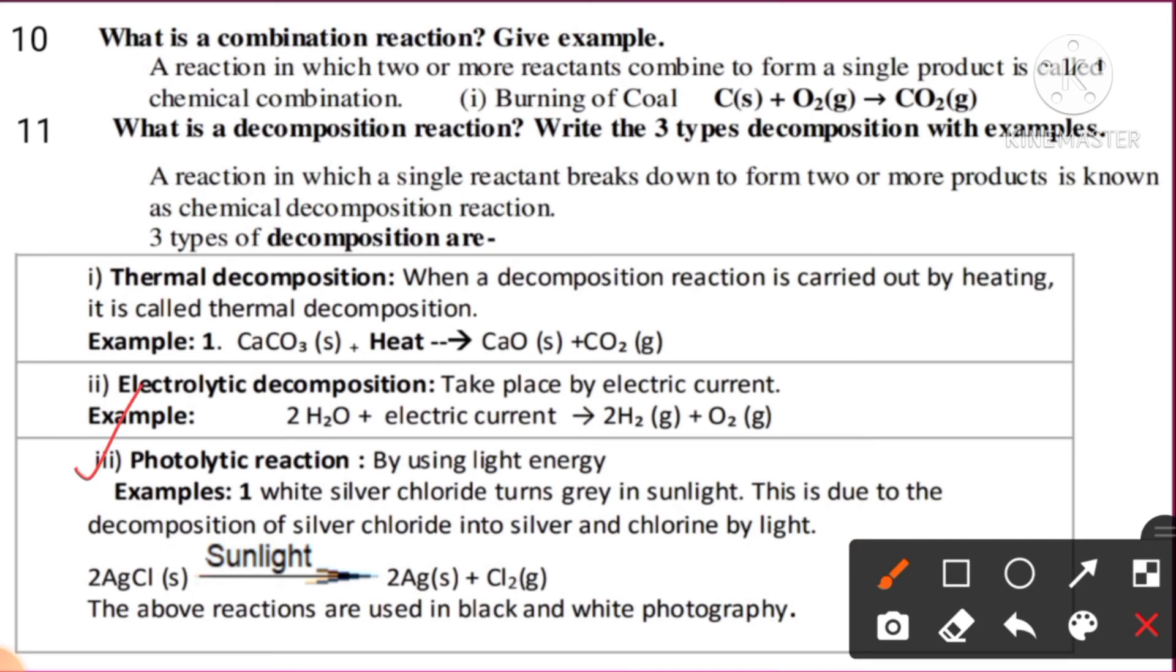Let us see the third one: photoelectric reaction. By using light energy, such reactions are called photoelectric reactions. The reactions which occur in presence of sunlight or light energy are called photoelectric reactions. Example: white silver chloride turns grey in sunlight. This is due to the decomposition of silver chloride into silver and chlorine in presence of light.